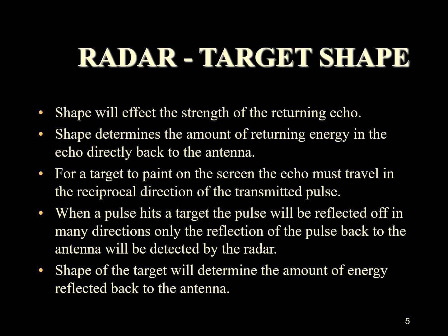A target's shape will affect the strength of the returning echo by determining the amount of energy which is reflected straight back to the antenna. The reflected echo must travel in the reciprocal of the pulse direction if an echo is to be detected by the radar. As a pulse hits a target there will be reflections off in many directions, but only the reflection back to the antenna is detected. If the pulse hits the surface straight on it will bounce directly back, but if it hits at an angle a large part of the energy will be directed away from the antenna and only a very weak echo will bounce directly back.